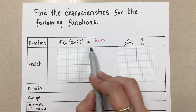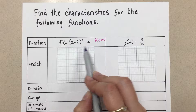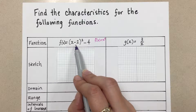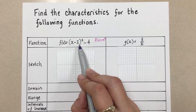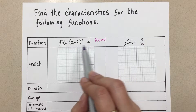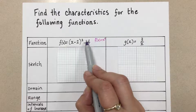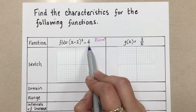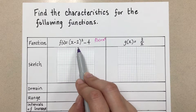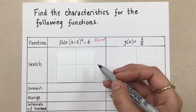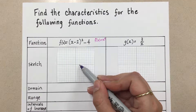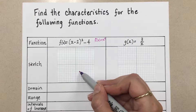This new function has no stretch or compression because there's no a or k value, but it does have two shifts. The value inside the brackets means we're going to move the parent function right 2, and the value outside is a c value meaning we move it down 4. You may also know this as vertex form, so the vertex is at (2, -4). I'm going to start by placing my vertex at (2, -4) right here.